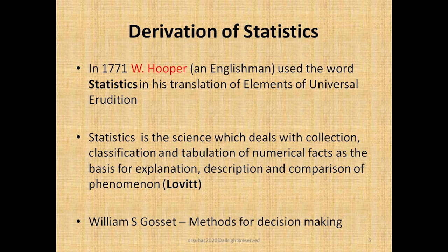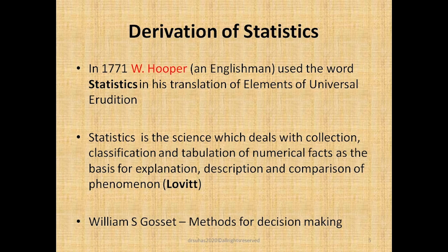No doubt, there is a huge gap between the definitions and derivations given in old statistics and modern statistics, but old statistics is still a part of present day statistics. During the 18th century, English writers used the word statistics in their works, and it gradually became more popular. A lot of work was done at the end of the 19th century, with new statisticians from various parts of the world making their contributions. At the beginning of the 20th century, it was William S. Gossett who developed methods for decision making based on small sets of data, and during the 20th century, several statisticians were active in developing new methods, theories and applications of statistics.